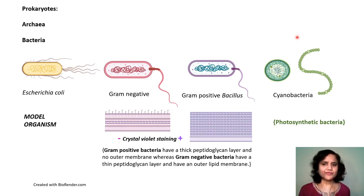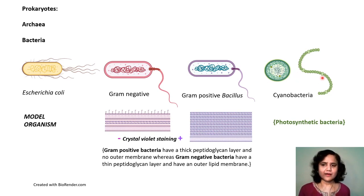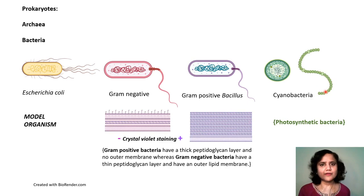Another class of interesting bacteria are cyanobacteria, which are photosynthetic bacteria. They have thylakoid membranes and also the enzyme rubisco, which fixes atmospheric CO2.